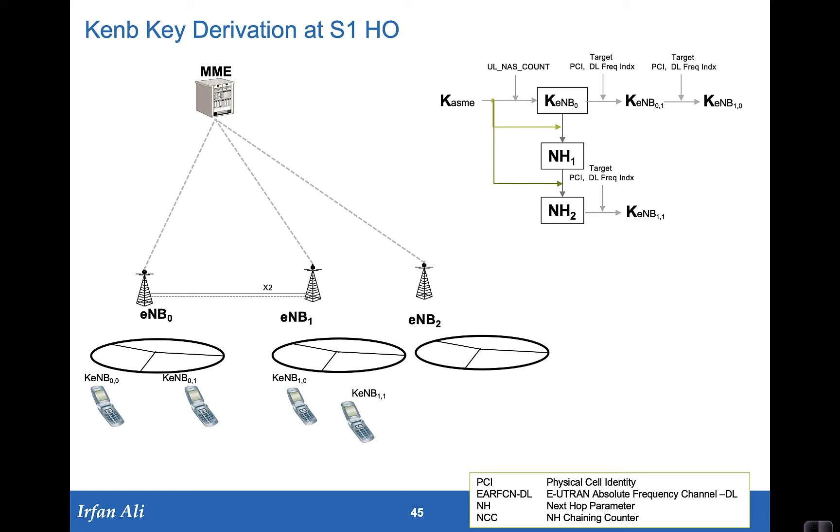Now that we have understood how the key derivation is occurring when we have an X2 network, we'll take the same example network that we had in the previous lecture. But in the last between E-node B1 and 2, we will assume that there is no X2 interface and hence the handover has to be an S1 handover.